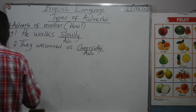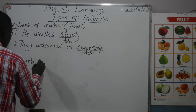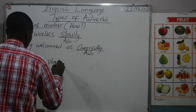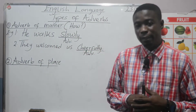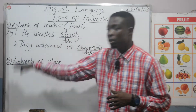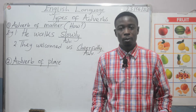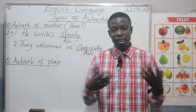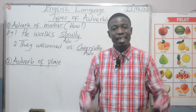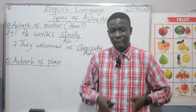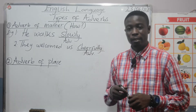Let's move on to the second type of adverb, and that is adverb of place. When we talk about adverb of place, this one describes or gives information about where an action took place. Right now I'm in this studio teaching, so the teaching is taking place in this studio — inside the studio. So, adverb of place describes where an action took place.